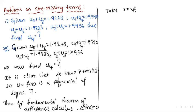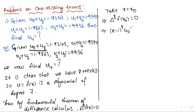This means (E minus 1) whole power 8 into f of x is equal to 0. That implies del power 8 into f of x at x0 is equal to 0, where f of x0 is equal to u0. We expand using the binomial expansion of (a minus b) whole power n.